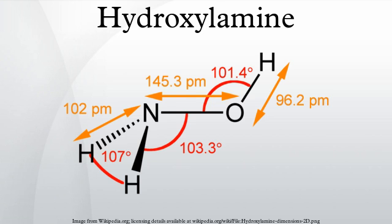The reaction of NH2OH with an aldehyde or ketone produces an oxime: R2C=O + NH2OH → R2C=NOH + H2O. This reaction is useful in the purification of ketones and aldehydes. If hydroxylamine is added to an aldehyde or ketone in solution, an oxime forms, which generally precipitates from solution. Heating the precipitate with an inorganic acid then restores the original aldehyde or ketone.